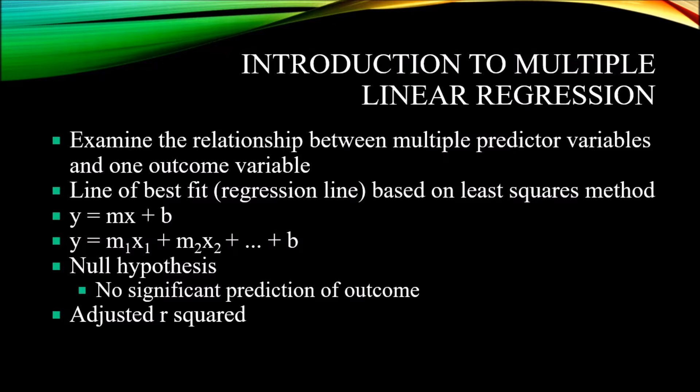We use a multiple linear regression when we want to examine the relationship between two or more predictor variables and one outcome variable. This concept is distinct from a simple linear regression. In the case of simple linear regression, we have one predictor variable and one outcome variable.